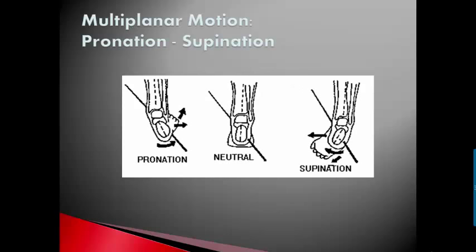Inversion and eversion happens at the subtalar joint, but typically we discuss in sport and clinical situations the multi-planar motion called pronation and supination. This is not the pronation and supination at the radial ulnar joint, it is down in our foot. For those of you that are runners or have ever purchased running shoes, you have motion control shoes that can control pronation typically and to a lesser extent supination. Looking at this image, pronation is when you're almost collapsing on the medial side of your instep, neutral is neutral, and supination is when you're riding on the lateral edge of your foot.